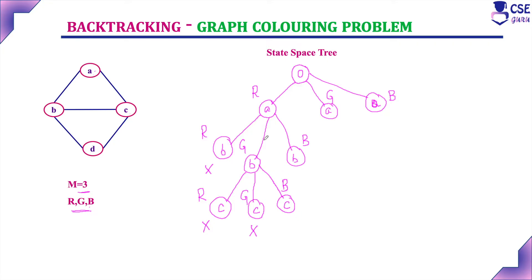Three vertices we have assigned the color. Next, the fourth vertex D. For D, can I give red? Its adjacent vertices are C and B. C is assigned with blue color and B is assigned with green color, so red we can assign to D. That possibility is there.